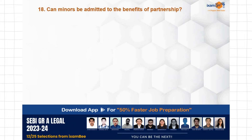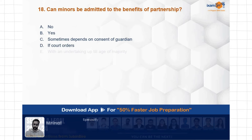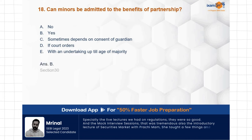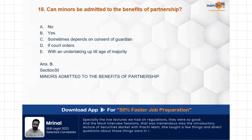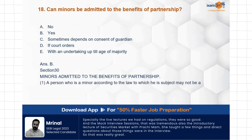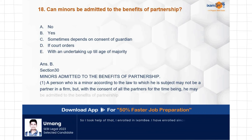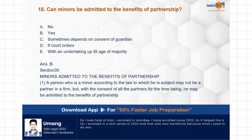Question: Can minors be admitted to the benefits of partnership? Options: no, yes, sometimes depending on consent of the guardian, if the court orders with an undertaking up to the age of majority. The correct answer is yes — minors can be admitted to the benefits of partnership. Section 30 covers minors admitted to the benefits of partnership, obviously subject to the consent of all the partners.